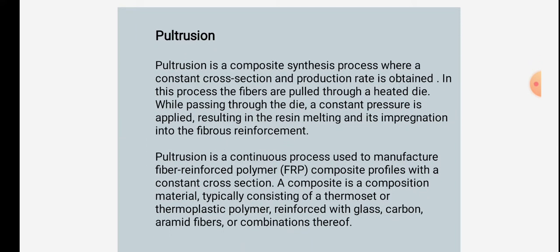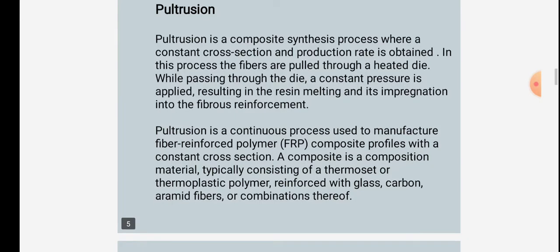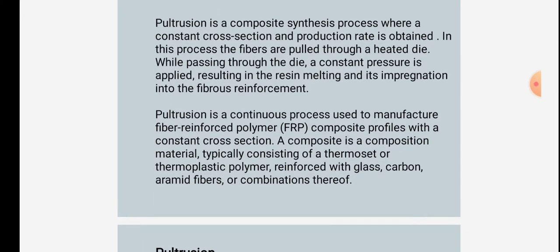Pultrusion is a composite synthetic process where a constant cross section and production rate is obtained. In this process, the fibers are pulled through a heated die. While passing through the die, a constant pressure is applied resulting in a resin melting and its impregnation into a fibrous reinforcement.